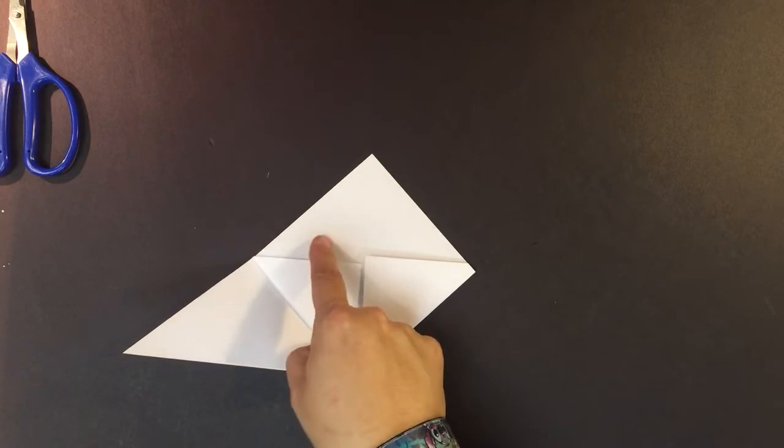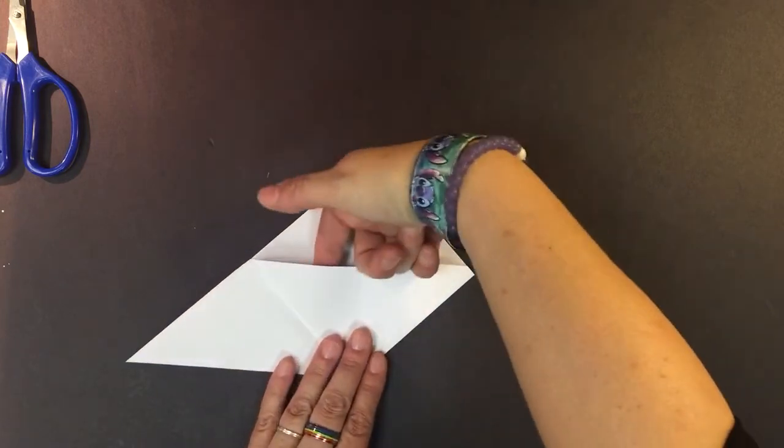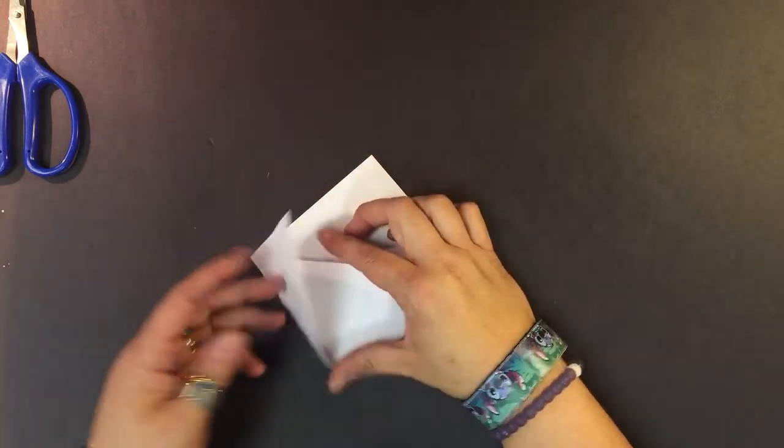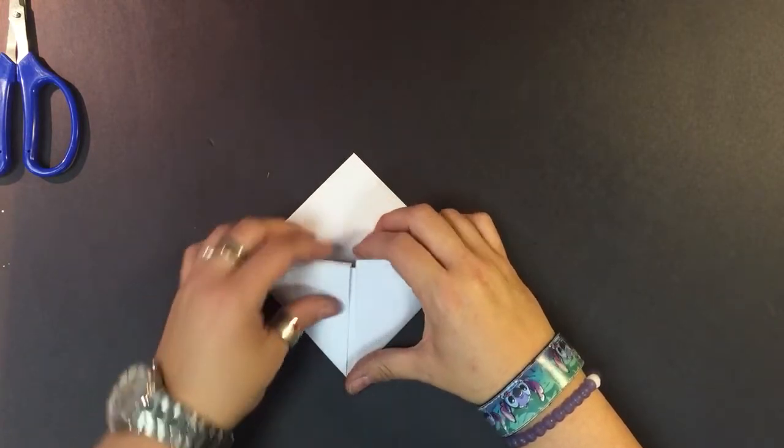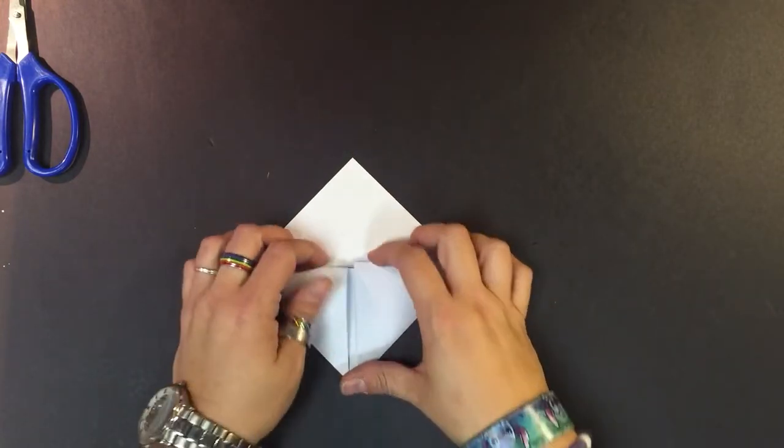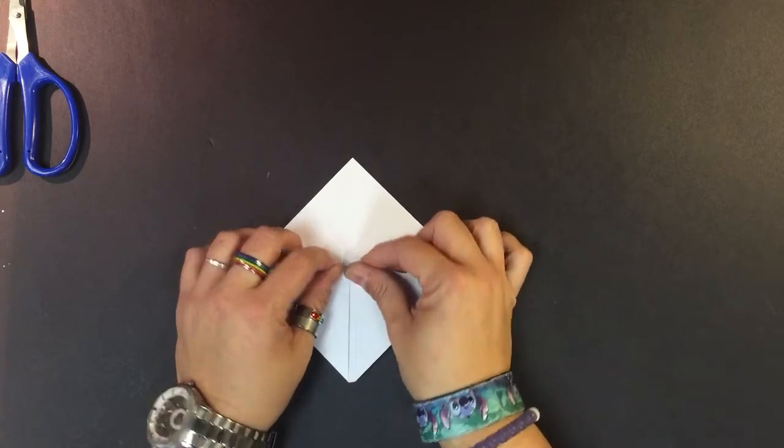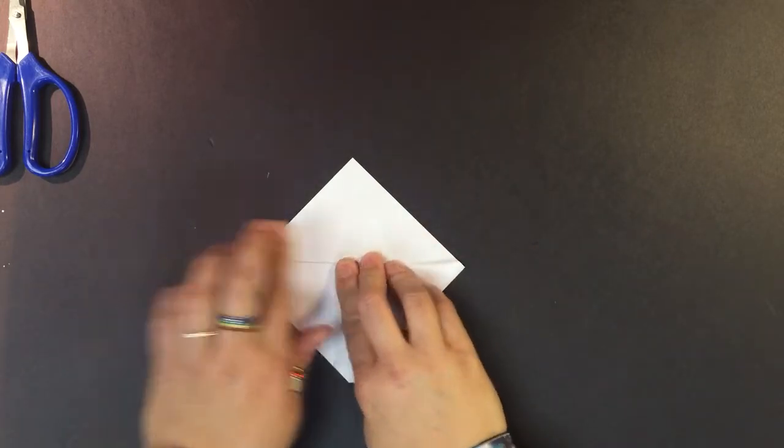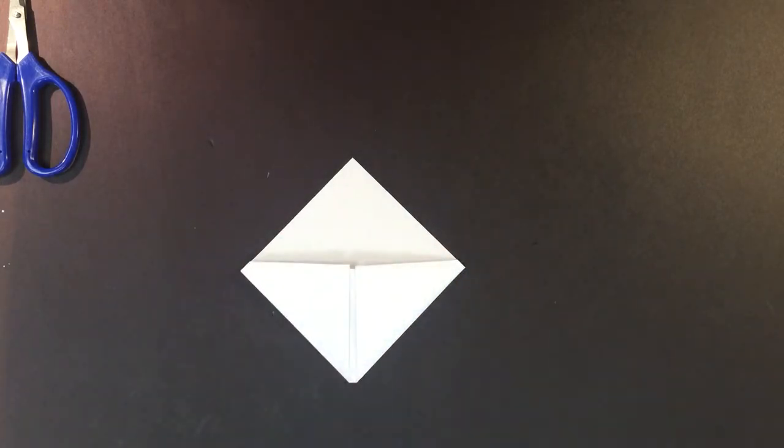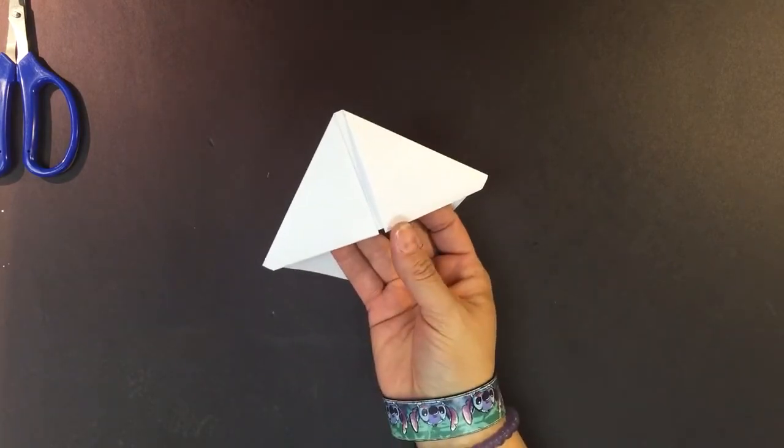You're going to do the same on this corner. Bring it up, place it inside the pocket, slide it all the way down as far as you can get it, and crease it. This is our bookmark.